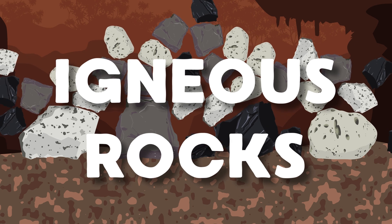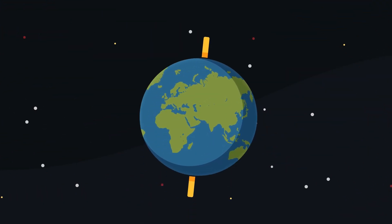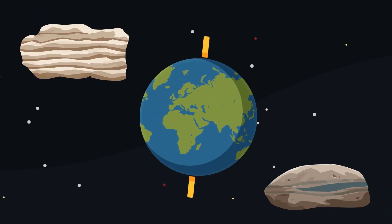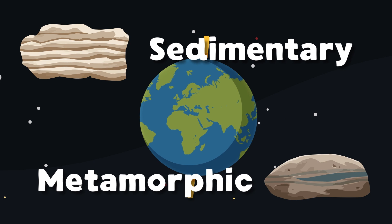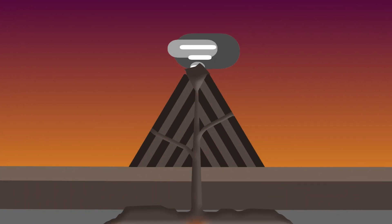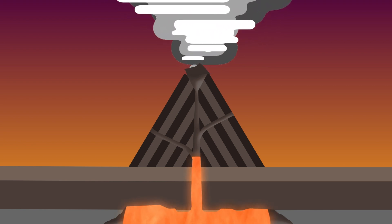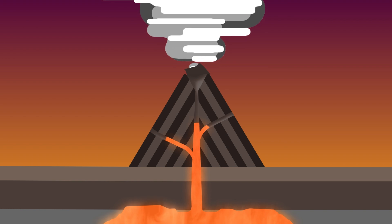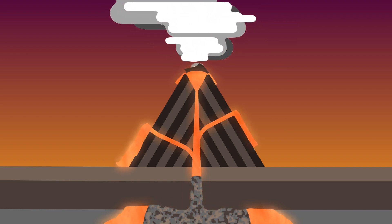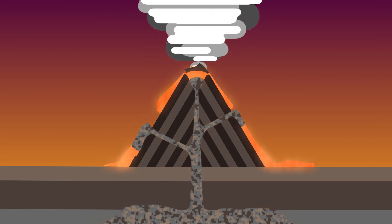Let's talk about igneous rocks. They make up a significant portion of the earth's crust. Igneous rocks are one of the three main types of rocks on earth — the other two are sedimentary and metamorphic. Molten rock called lava reaches the earth's surface, while molten rock called magma is below the earth's surface. When this molten rock material cools and becomes solid, igneous rocks form.